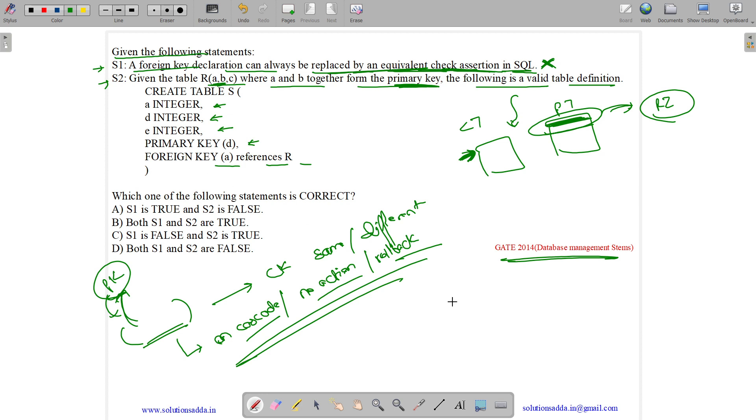So we have two tables. We have R table which has A, B and C where AB is the primary key. We have S table having A, D, E where primary key is D. And foreign key A references this A of R.